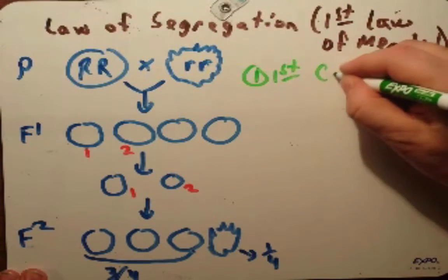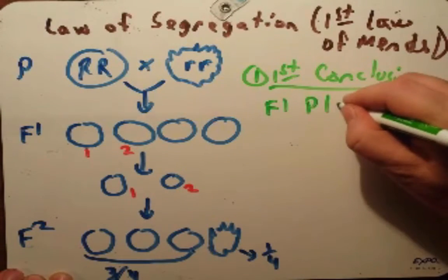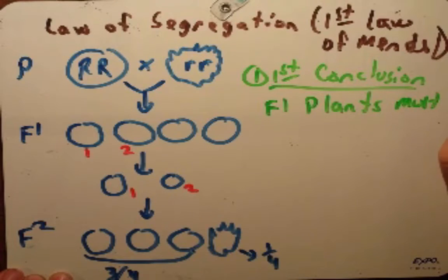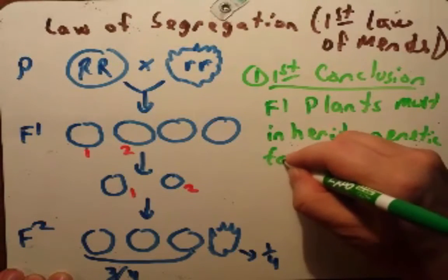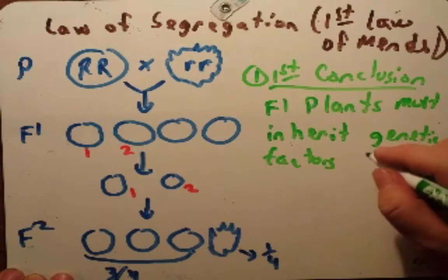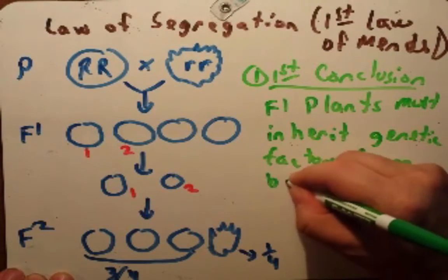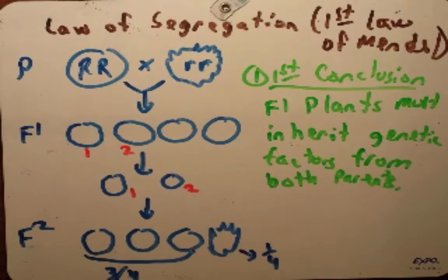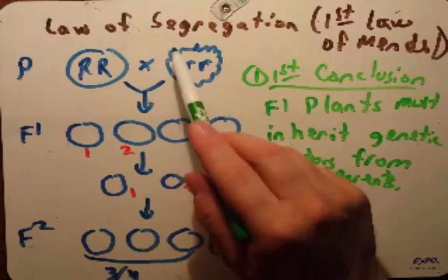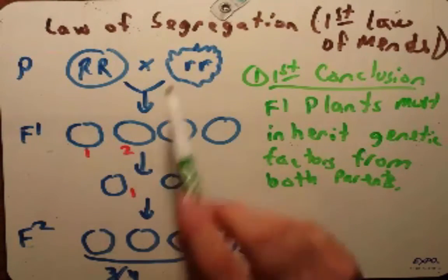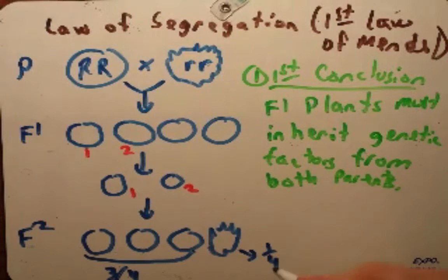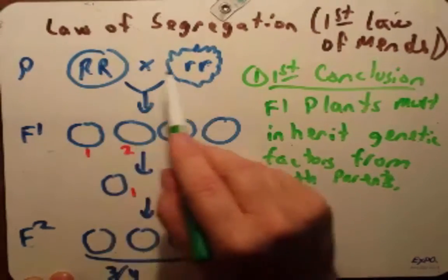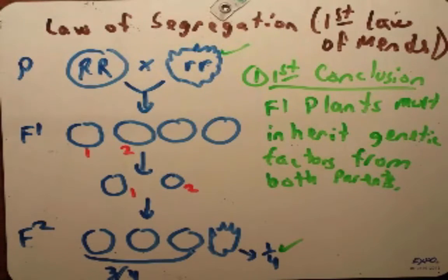This led to Mendel's first conclusion, and that is F1 plants must somehow inherit genetic factors from both parents. The reason he made this conclusion was that if they didn't inherit some of the factors from both parents, in this case little r and big R, then there would have been no way that the little r could have returned. So it seemed reasonable to him that the only way you could get these individuals reforming in F2 was if some of this material from this parent was passed on to the F1 generation.